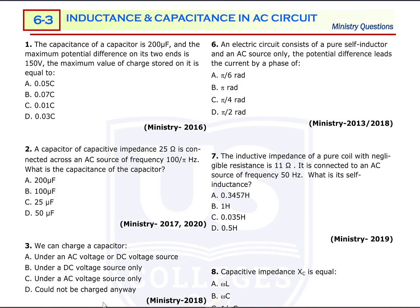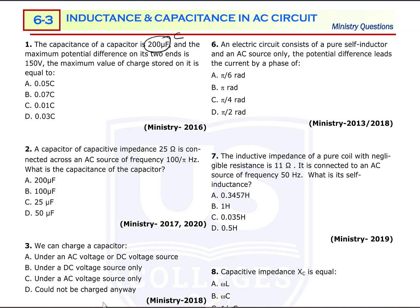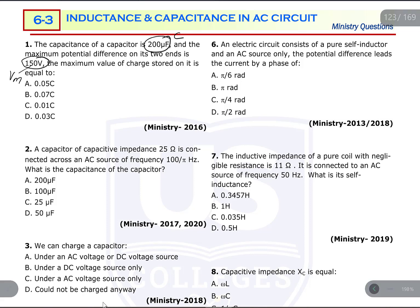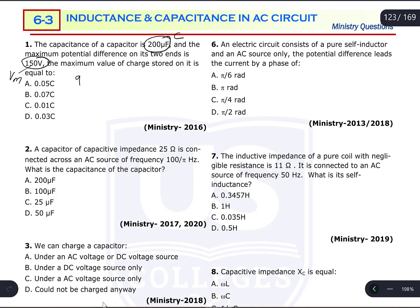Question number one: the capacitance of a capacitor is 200 microfarad, and the maximum potential difference on its ends is 150 volts. The maximum value of the charge stored on the capacitor is the question. We know Q is calculated by capacitance multiplied by potential difference.